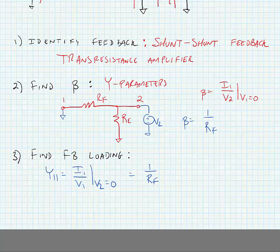We also need to find Y22, which is equal to I2 over V2 when V1 is equal to a short circuit. Here, we're going to short V1, and we're going to put a test voltage at V2. And if we do this, we would find that this was equal to 1 over RF in parallel with RE.